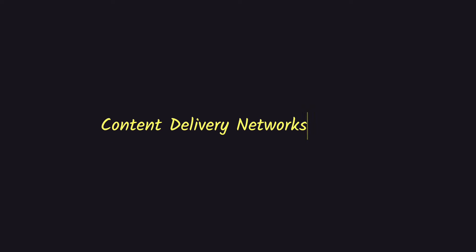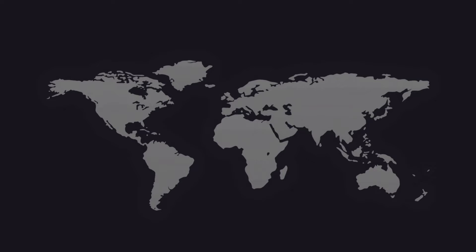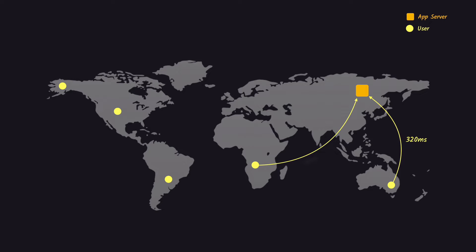Our topic for today is content delivery networks or CDNs. Normally when you deploy a web application you pick a location for the server — for example, when using AWS, Digital Ocean, or GCP you select where the server is placed. Although our server has one location, clients might be from all over the world, and when they open the website the request takes time reaching the server and getting a response back. The farther the client is from the server, the higher the response time.